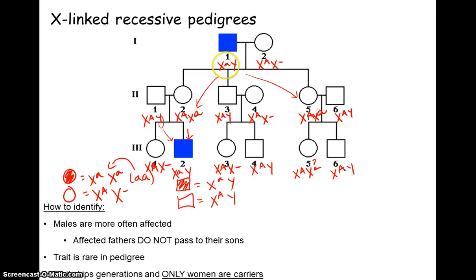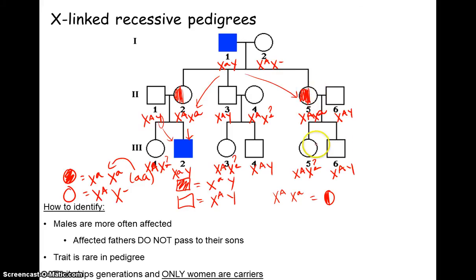Over here, dad only has big A to give, but mom could be big A or little a, so we can't tell — we put a question mark. Some branches have no affected offspring, so we cannot determine the second allele there either. Because this is recessive, we go back and shade in any carriers. Any female who is X big A, X little a is a carrier. There are a few confirmed carriers we can fill in, but for others we can't tell from the pedigree alone.